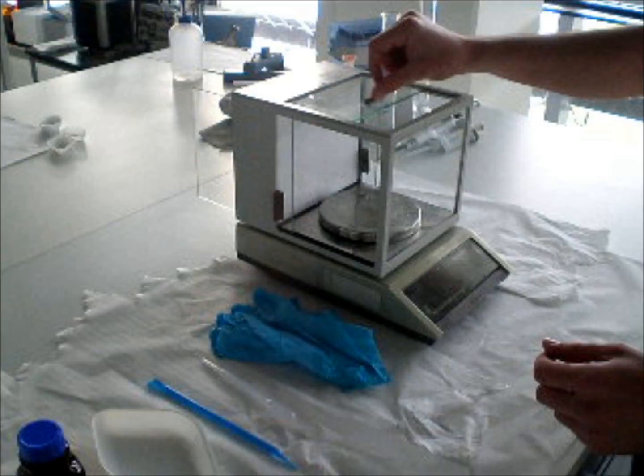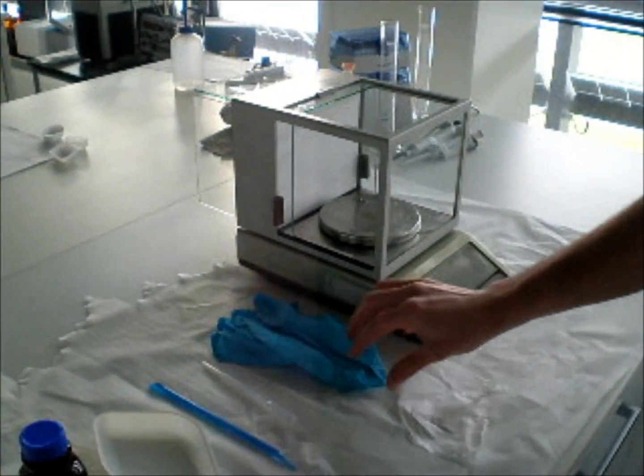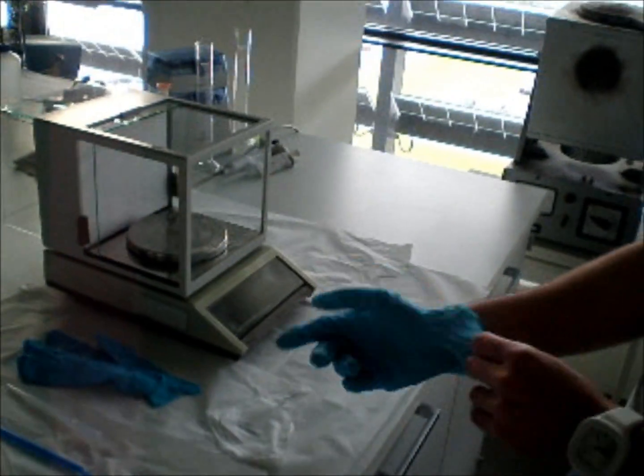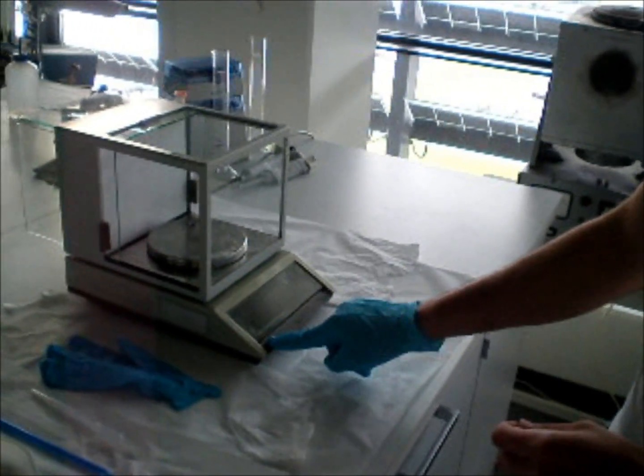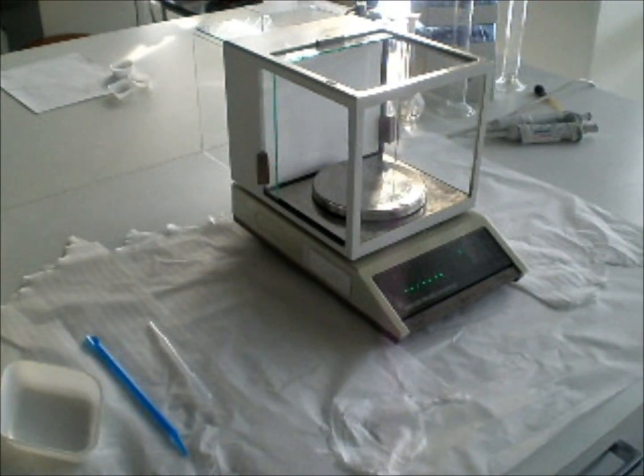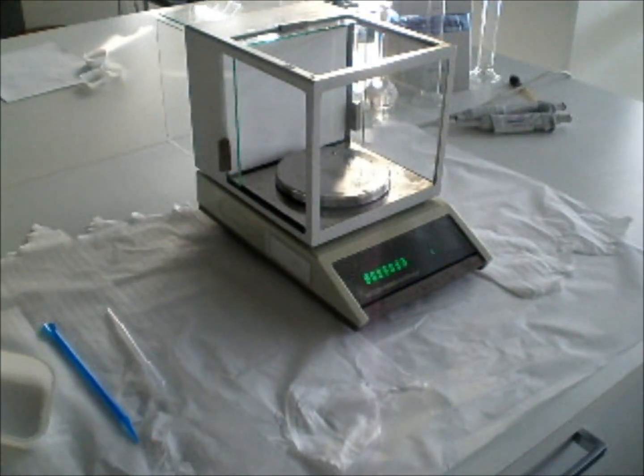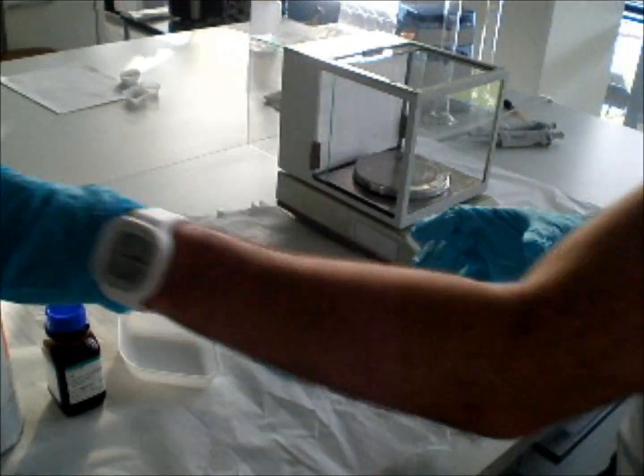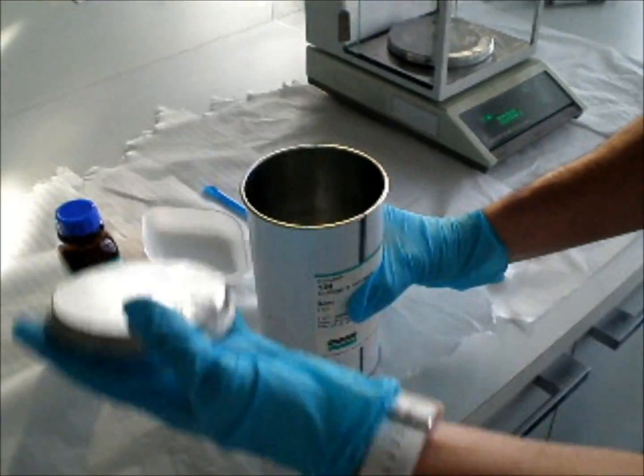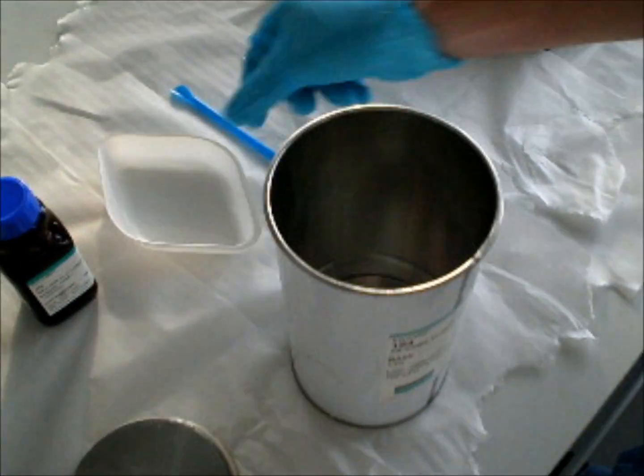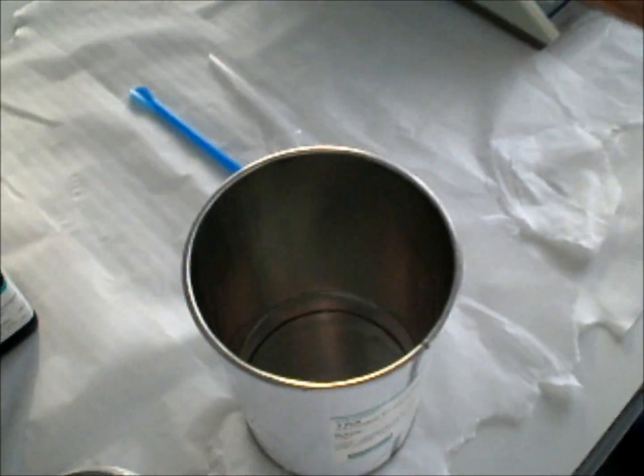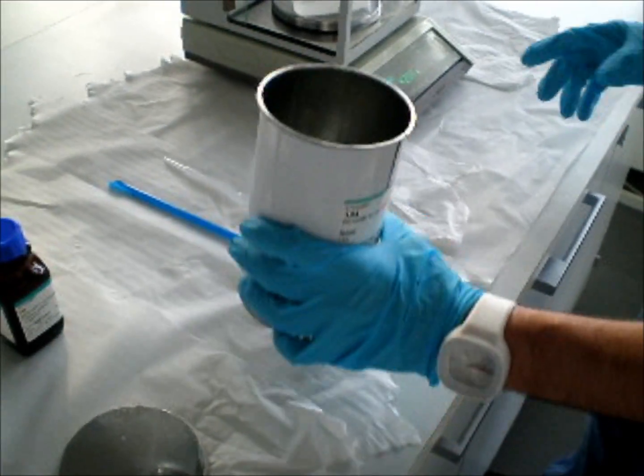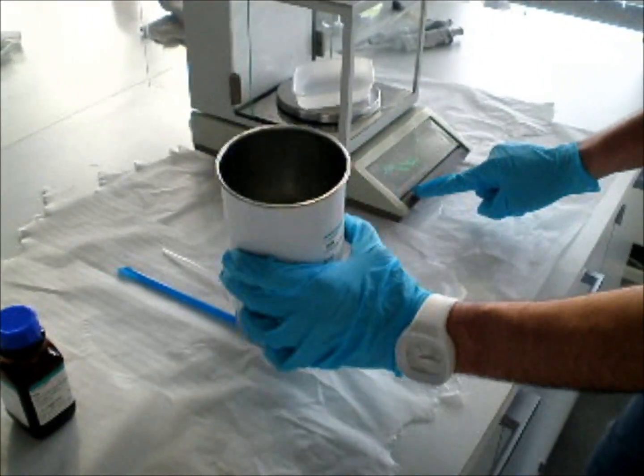We have here the gram meter. We start it on and put our gloves. Ok. So, we have the silicone. We open it, put it inside. There is nothing inside, so we make it zero.